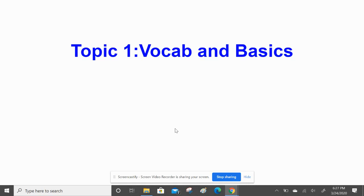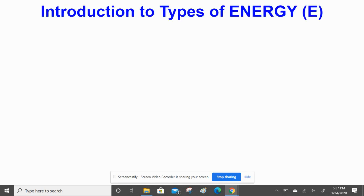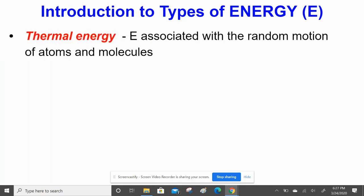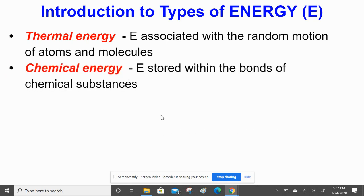Today we're just going to cover the basics and different types of energy. Thermal energy is associated with the random motion of atoms and molecules and how they collide. Chemical energy is what you've already been experiencing in chemical equations, either on the reactant side or the product side. Energy is stored within the bonds and chemical formulas that we've been working on.